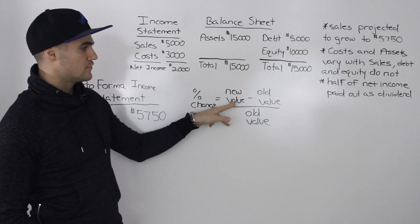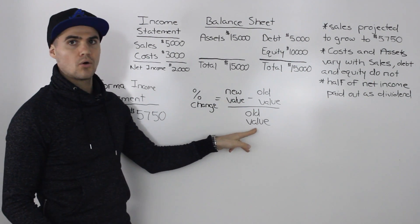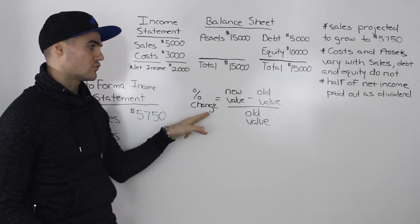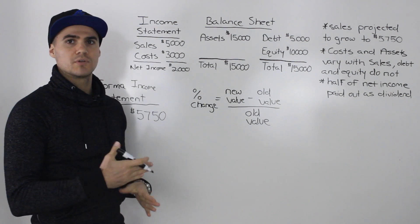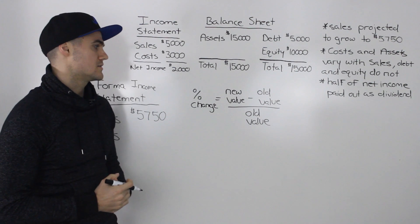To figure out the percentage change of something, it's always equal to the new value minus the old value all over the old value. So you may want to write this general formula down because you're going to be using it a bunch of times in this course.